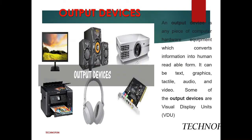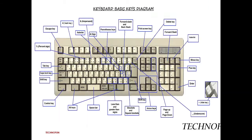The second type is output devices. Output devices are used to show the data or result after processing the data by the computer. These are the output devices: monitor, speaker, printer, headphone, etc. — all are output devices.